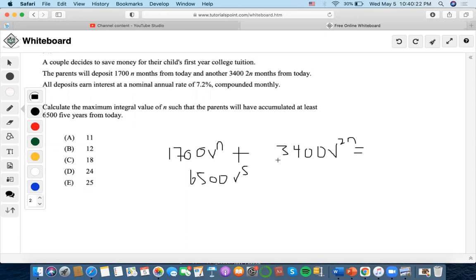We're going to do 7.2 divided by 12 to find our monthly rate. It's going to be 0.6%.